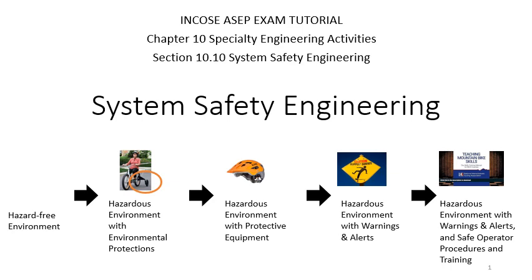The system safety engineer's responsibility is to avoid fatalities, injuries, and property damage. As all good system engineers know, we want to start off with a hazard-free environment. But if you can't have a hazard-free environment, you're going to put some protections on the environment. If that won't work, then you protect the human. And if that doesn't work, you can put warnings and alerts, and then supplement the warnings and alerts with instruction and training.